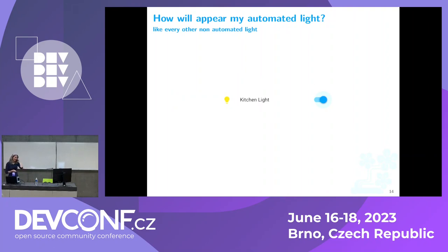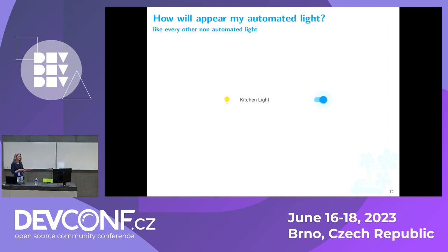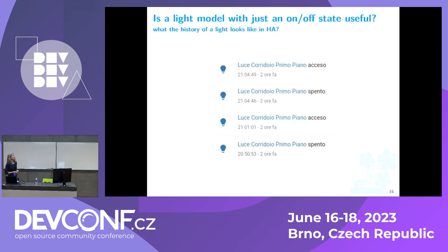This is another problem I see. We have this light automated, but to the end user the automated light looks like any other non-automated light. I don't really think this is very useful. How can I tell if someone has forced my light, or if it is just turned on because the system knows it should be? And if I want to force it, you might say I can put the input Boolean widget next to it — but that only works if you're the one who wrote the script. I think it's much more a matter of models.